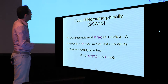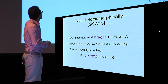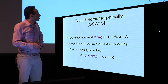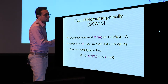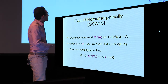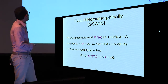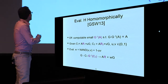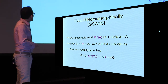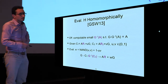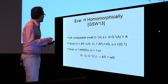We need homomorphic-evaluation-friendly constructions, so we use the GSW13 construction where the gadget matrix has a small inverse G⁻¹(A) with respect to matrix A. You can compute additions, multiplications, and NAND functions of two ciphertexts C1 and C2, corresponding to U and V, easily by computing G⁻¹(C1) times a small matrix with respect to A times C2.